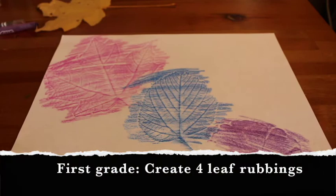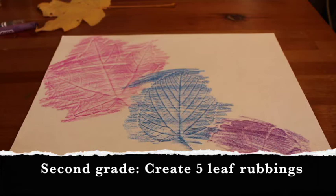First grade, I want you to create at least four leaf rubbings. Again, you can do more if you would like. And second grade, I want you to create at least five leaf rubbings. And again, you can always do more if you would like.